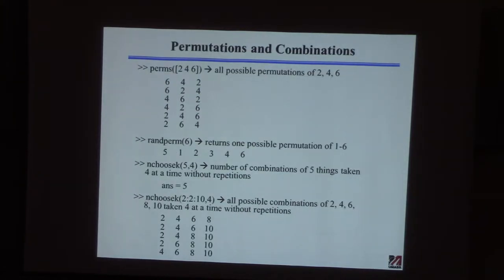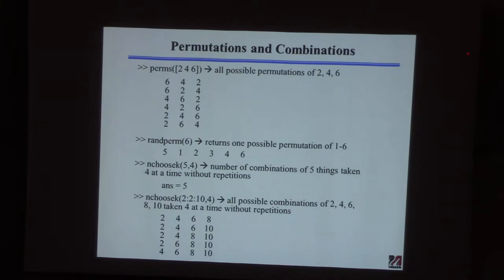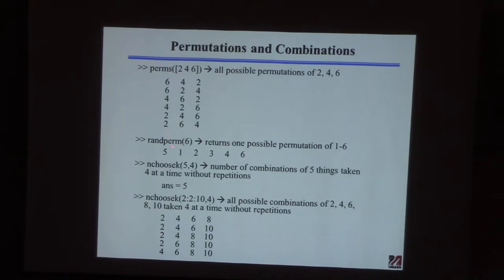We talked about permutations and combinations, and you can do all these calculations in MATLAB. For example, if you want to enumerate all possible permutations of 2, 4, and 6 — remember, permutations mean order matters — MATLAB will list them all. You can also generate a random permutation: this command generates a random permutation of numbers between 1 and 6. Each time you issue the command, you get a different one — it's random. This is how you could sample a random permutation.